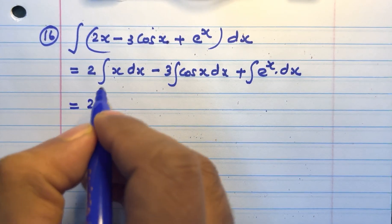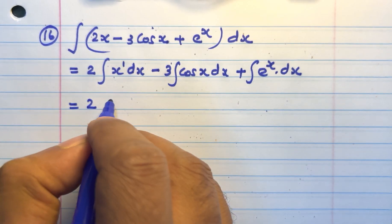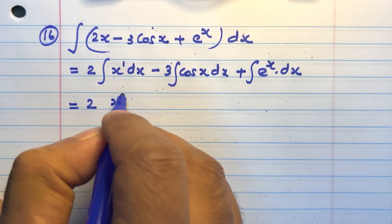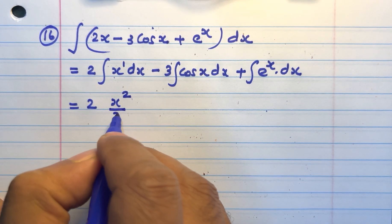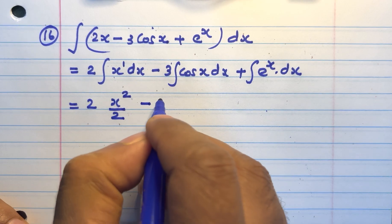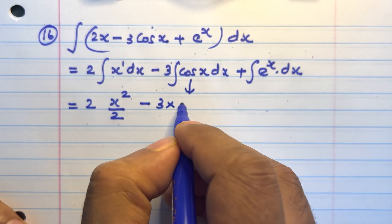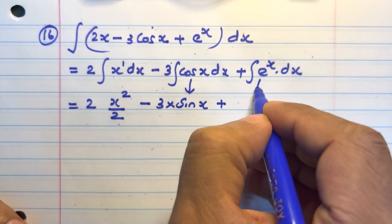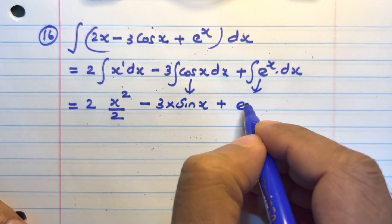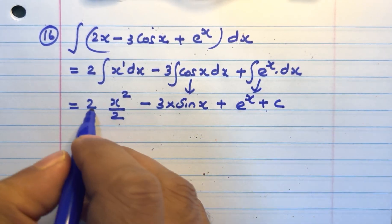That is equal to 2 into x raised to 1. Integration of x raised to 1 is x raised to 1 plus 1 by 1 plus 1, that is x raised to 2 by 2, minus 3 into the integration of cosx which is sinx, plus integration of e raised to x which is e raised to x, plus c.